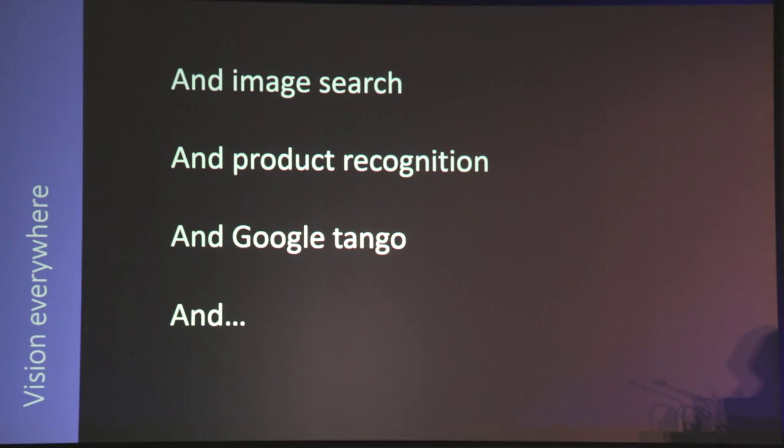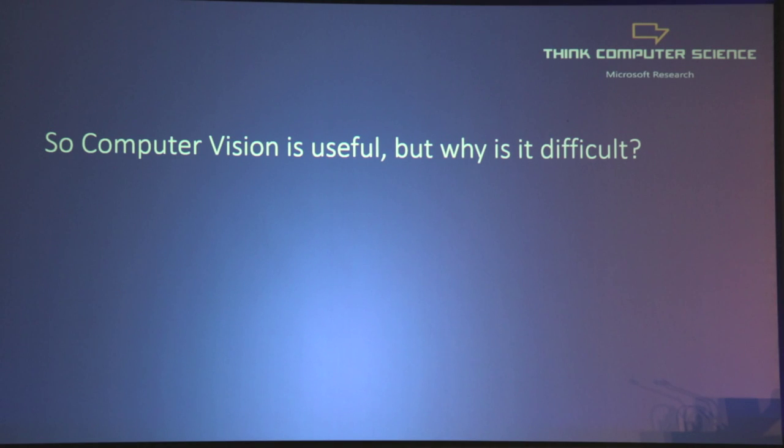The list goes on. You might have tried something like Google Image Search, or come across supermarkets where you can use simple devices to tag objects to buy. We've seen why computer vision is useful and how it makes a difference to our lives — but why is it difficult?